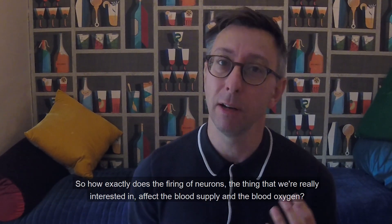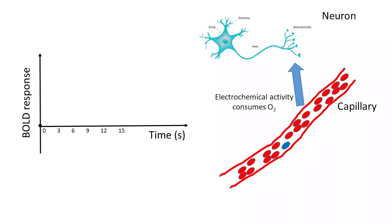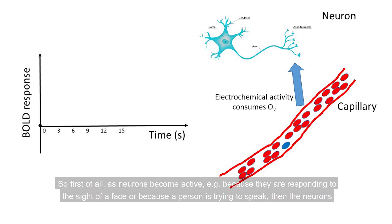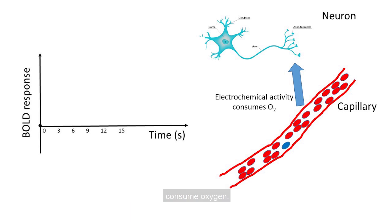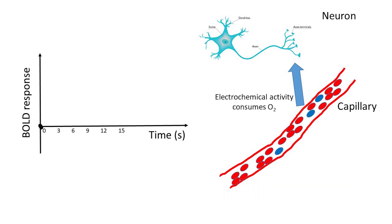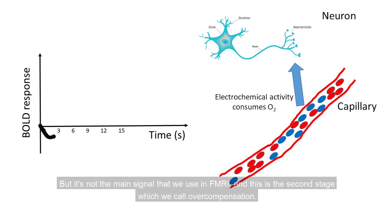How exactly does the firing of neurons affect the blood supply and the blood oxygen? We can think of this happening in three different stages. First, as neurons become active — for instance because they're responding to the sight of a face or because a person is trying to speak — the neurons consume oxygen. The brain doesn't store its own oxygen supply so it needs to get it from the blood. As neurons fire, they consume oxygen and oxygenated blood gets converted to deoxyhemoglobin. That's the initial stage of this particular process, but it's not the main signal we use in fMRI.